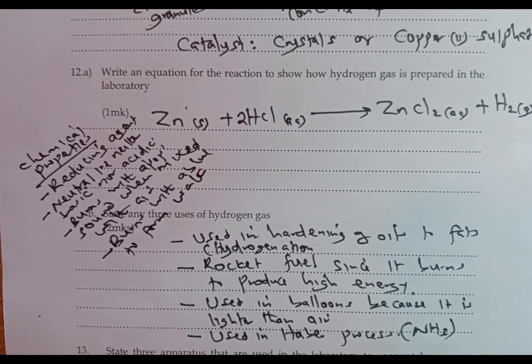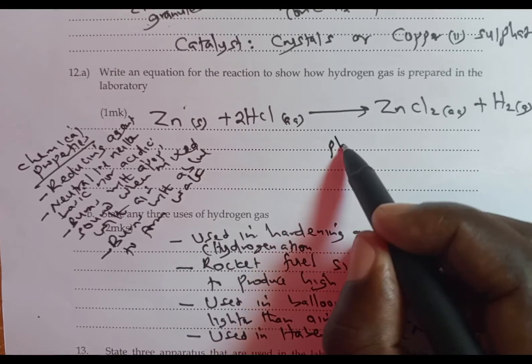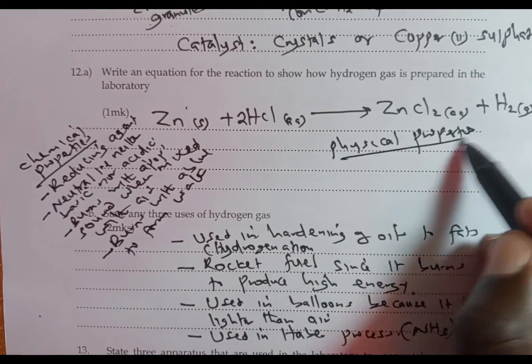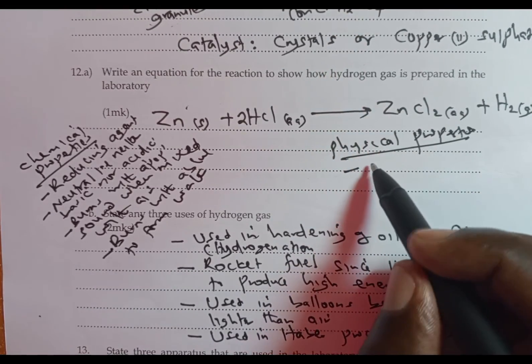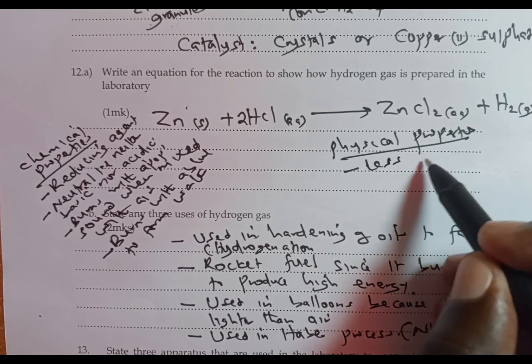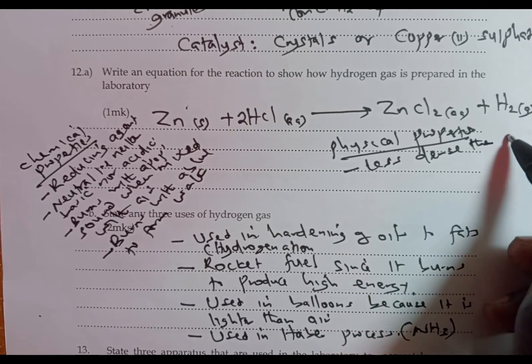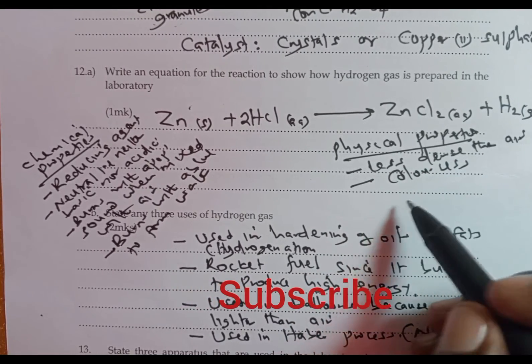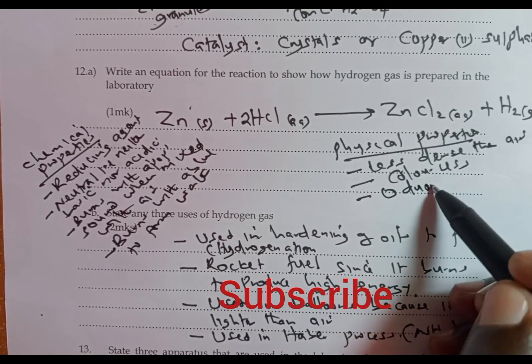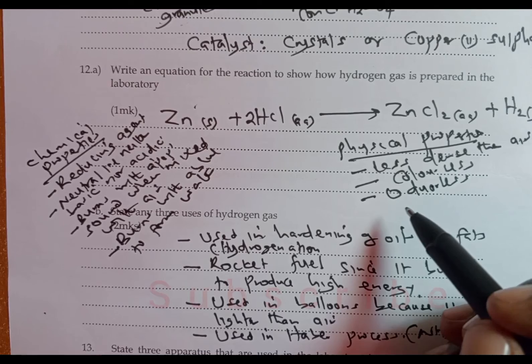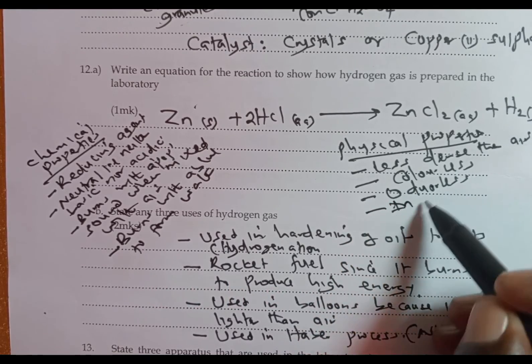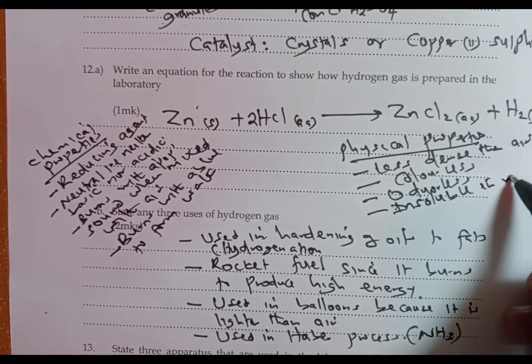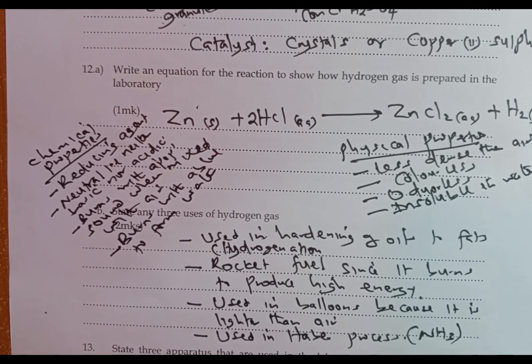You can as well be asked about the physical properties of hydrogen. Number one: it is less dense than air. Number two: it's a colorless gas. Number three: it is odorless, that means it does not have a smell. We can also say it is insoluble in water, among other physical properties.